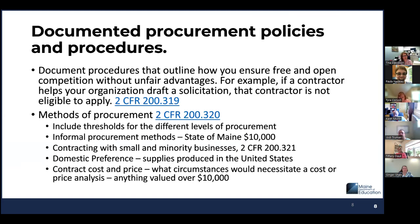You must maintain written policies and procedures as part of your procurement records. Document procedures that outline how you ensure free and open competition without unfair advantages. For example, if a contractor helps your organization draft a solicitation, that contractor is not eligible to apply for the contract. Methods of procurement: define the types of procurement by setting dollar amounts and defining levels. The informal procurement method in the State of Maine is $10,000 or less — that means we can get quotes and encumber a contract using the lowest quote.